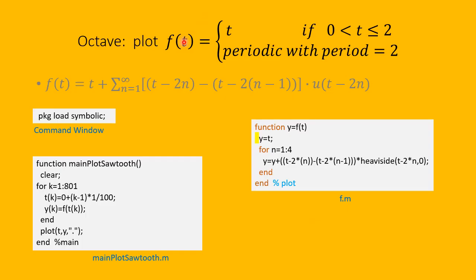Now let's consider f(t) defined as: f(t) = t for t in [0, 2], and periodic with period 2 for other values. We can write f(t) = t + the sum from n = 1 to infinity of [(t − 2n) − (t − 2(n−1))] times the unit step function u(t − 2n). In MATLAB and Octave, u is basically the heaviside function.